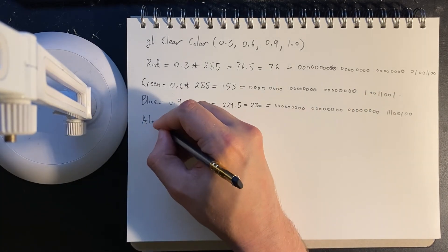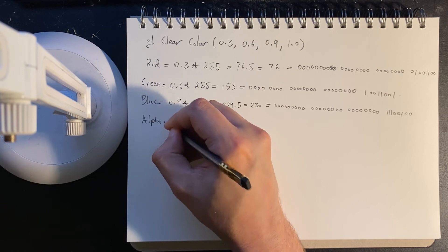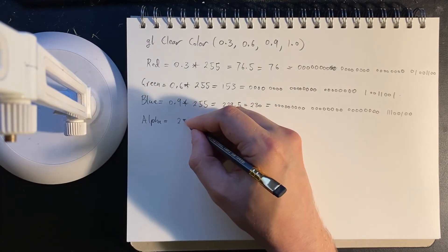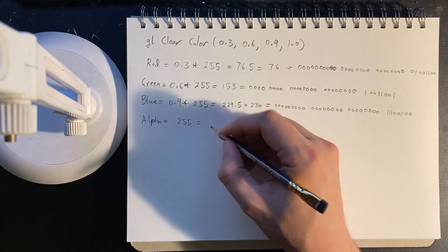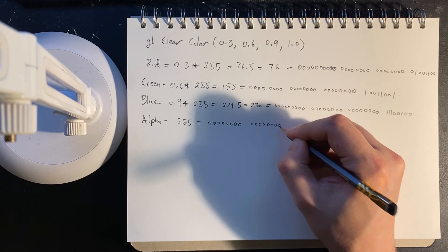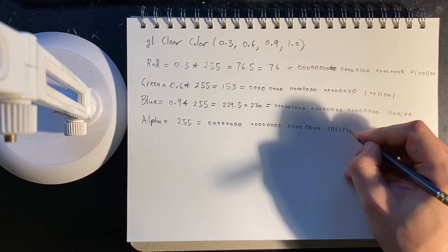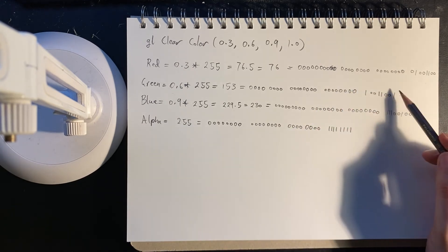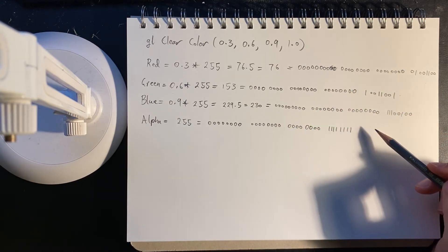And then finally, we have the alpha, which we can see here. We have 1, 1 times 255 is 255. And that's very clear. Cool. So each of these numbers has got the channel in it.